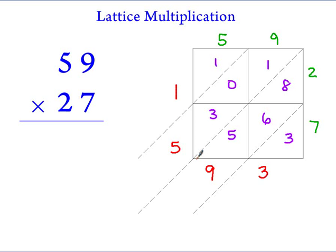To understand why lattice multiplication works, note that the diagonals in the lattice simply correspond to our place value columns. The far right hand diagonal is the ones place, the next one is the tens, and so on. Ones, tens, hundreds, thousands.